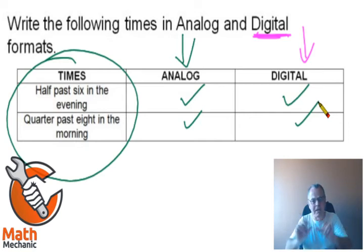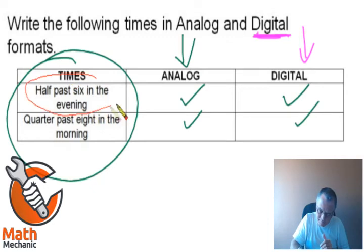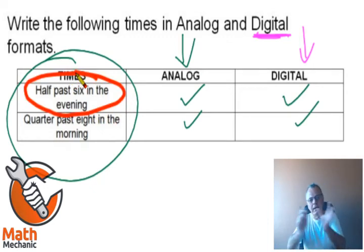Now, obviously that little space for the analog time is a bit cramped, so you're more than welcome to just redraw a circle and then indicate the numbers and the arms of the clock face for those two times. But the important part of this question is that you can read in words and then put it into a clock face analog and digital for both of those times. Typically what they would give you is the other way around.